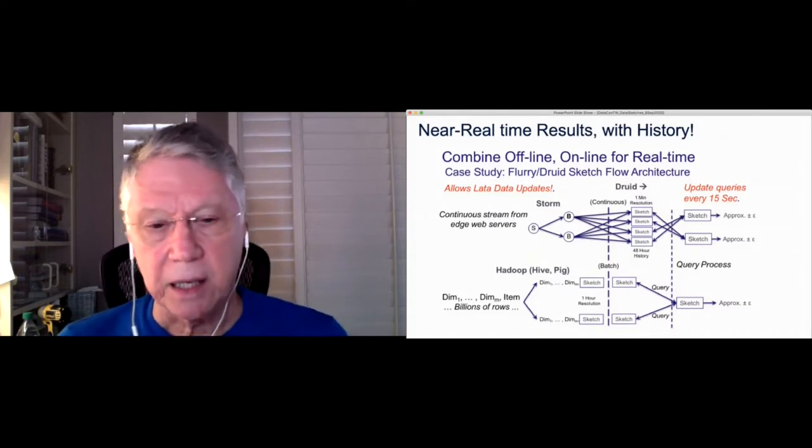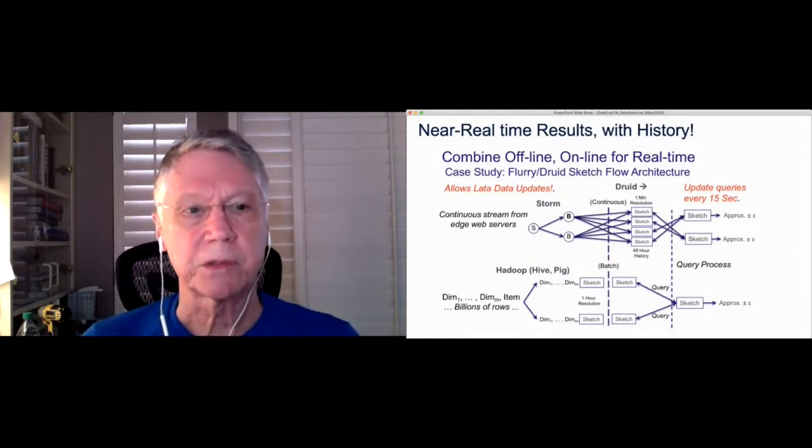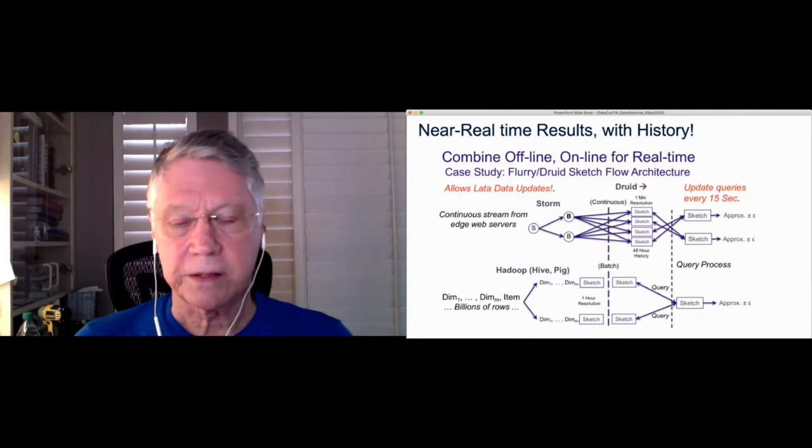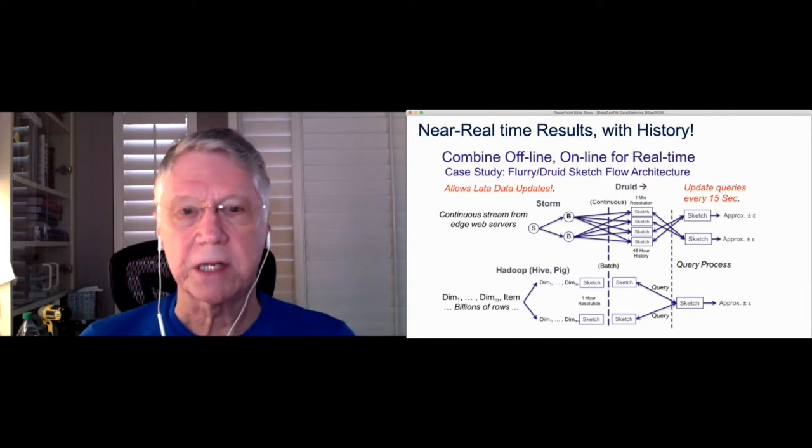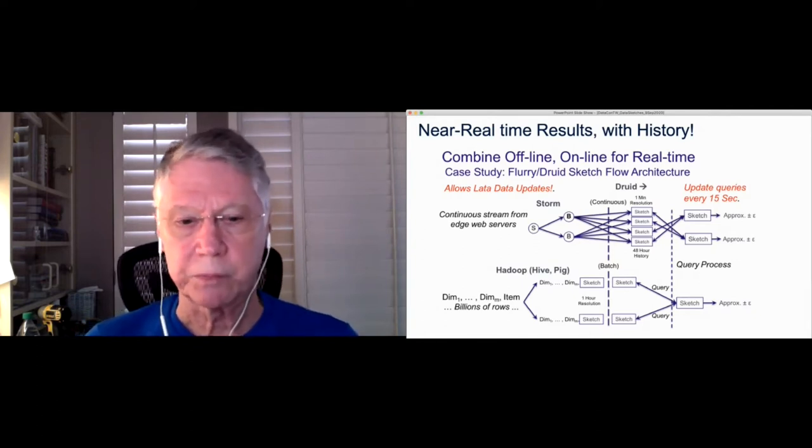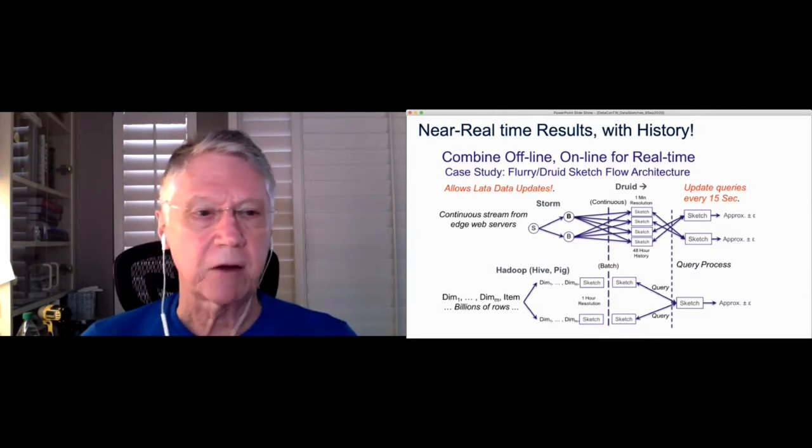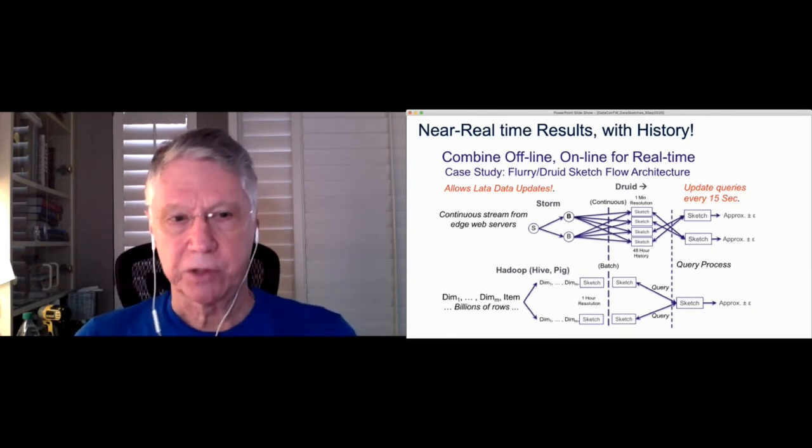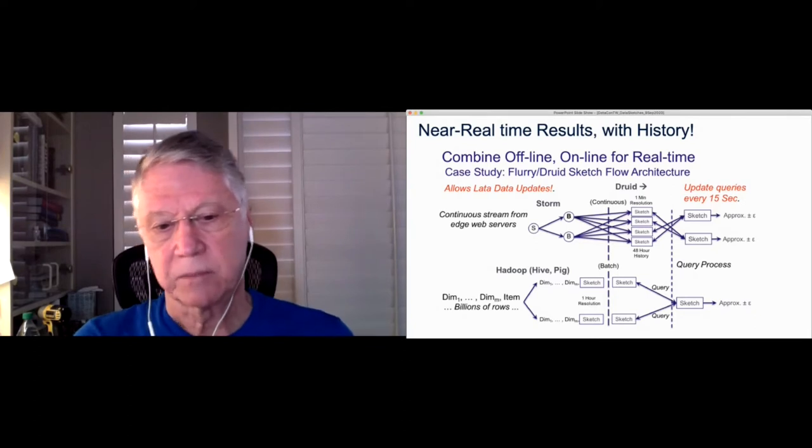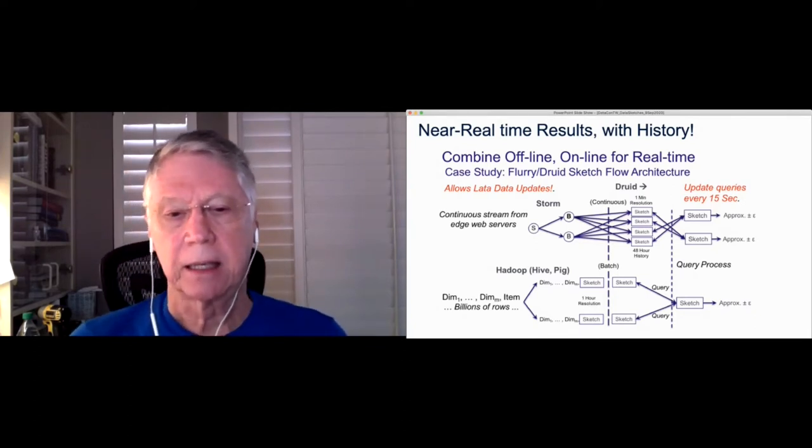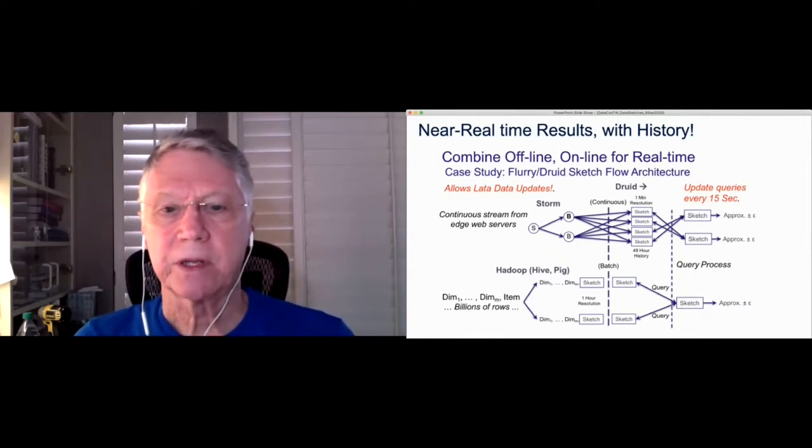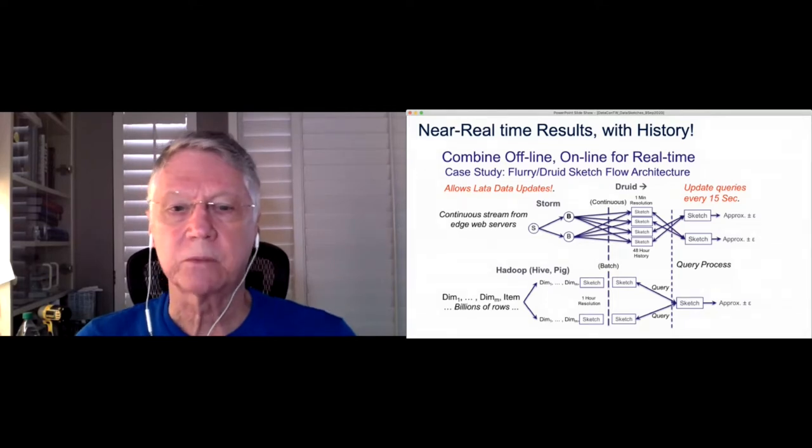So this is actually a case study, one of our internal systems. It was called Flurry. And here, the internal architecture of this allowed real-time analysis, and it was achieved this way, where in the top diagram, you have a continuous stream from our edge web servers of data streaming in through a storm process, which the storm server basically did this partitioning into different dimensions. And those were fed into a Druid system where the sketches were built with a 48-hour history, and these sketches had one-minute resolution.